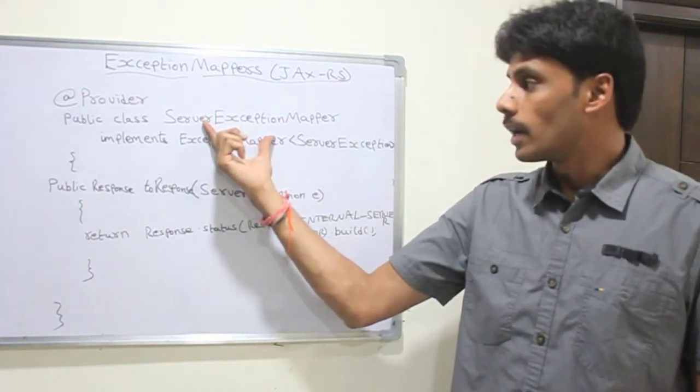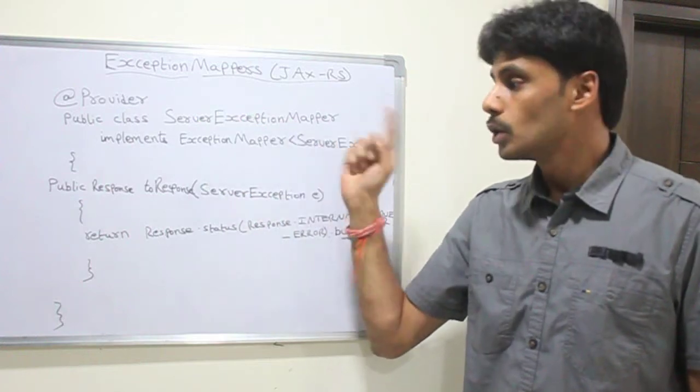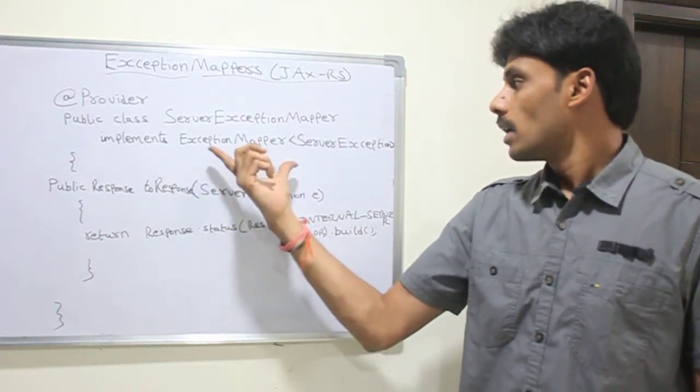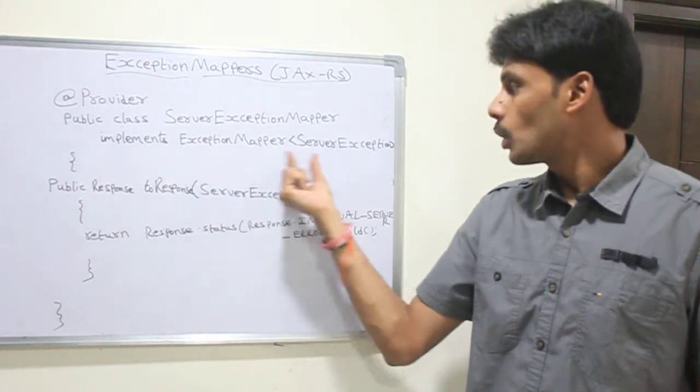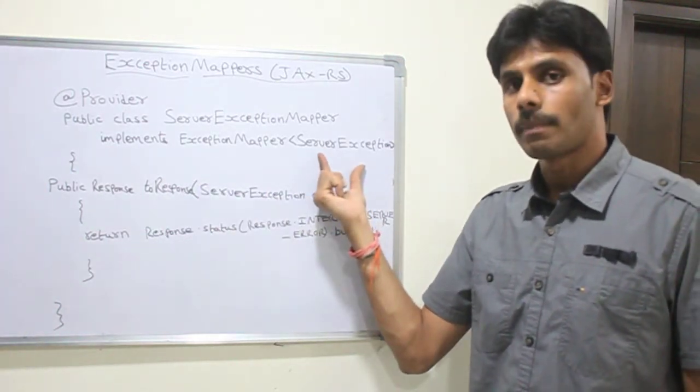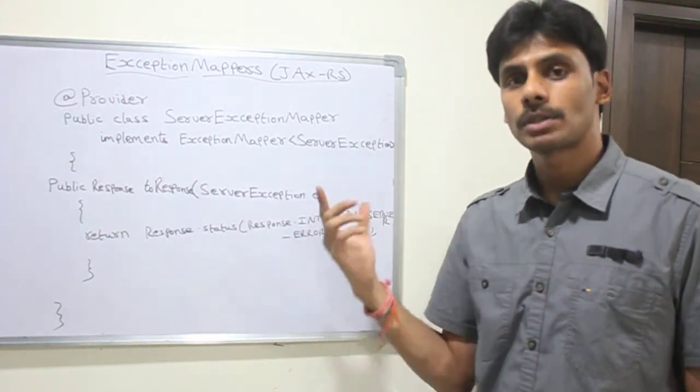And our exception mapper, in my case ServerExceptionMapper, should implement this generic interface and we need to pass it the generic type which is nothing but the exception we want to handle.